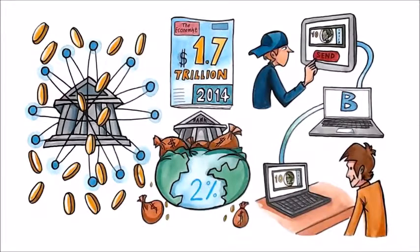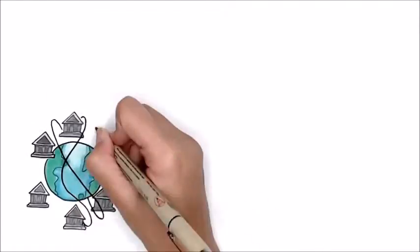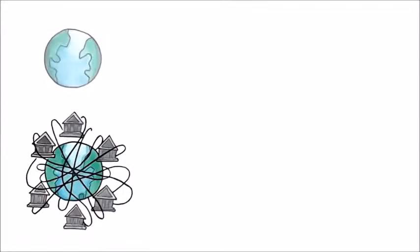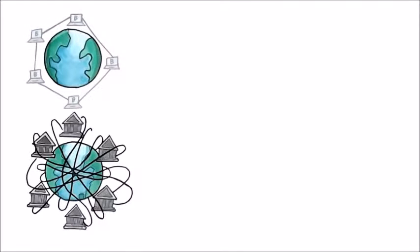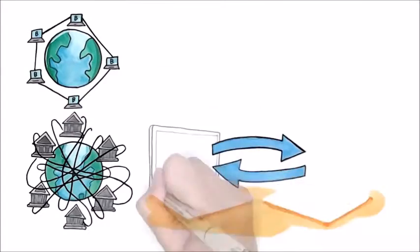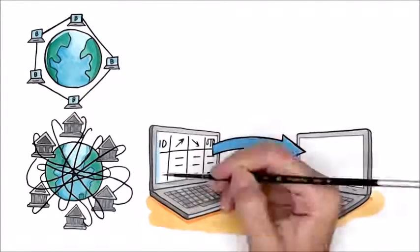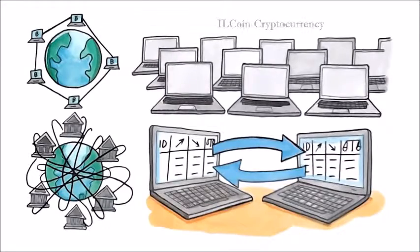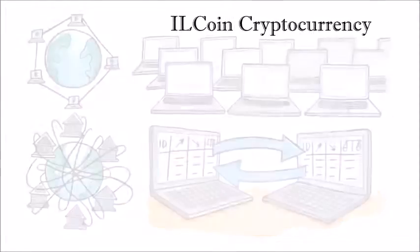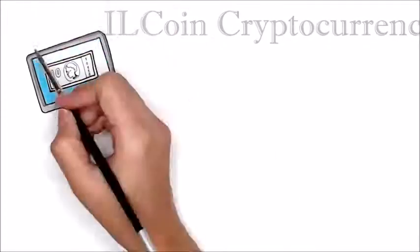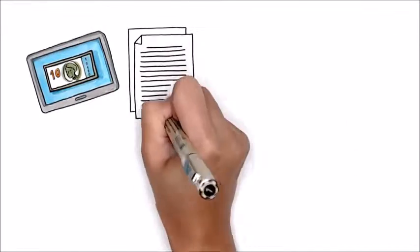Instead of sending payment information through a few servers, blockchain uses thousands of personal computers on the internet. All transactions are copied and cross-checked between every computer in a system-wide accounting book called the ledger, which becomes very safe at scale.